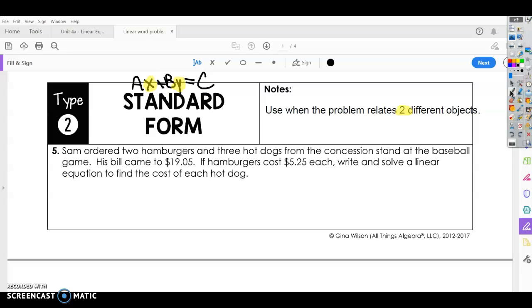Alright, so let's call X and Y our two variables, and we can say that our hamburgers, if you can read that, and our hot dogs are our Y. Alright, so Sam orders two hamburgers and three hot dogs, so we're going to have 2X plus 3Y. Okay, looking at the equation up here, AX plus BY equals C, so we got two hamburgers plus three hot dogs equals the $19.05 that he had to pay.